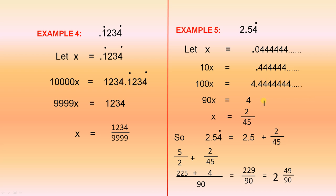Example 4. We're working on 0.1234. Now those two dots mean that the 1, the 2 and the 3 and the 4 recur. For example, this is the same as 0.1234, 1234, 1234, etc. So let x equals that decimal.